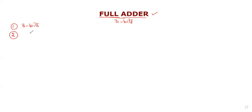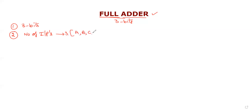The next step is to identify the number of inputs. We need three inputs to add three bits, so three inputs are required: A, B, and C — using alphabetical letters.